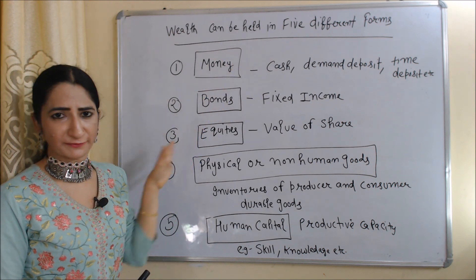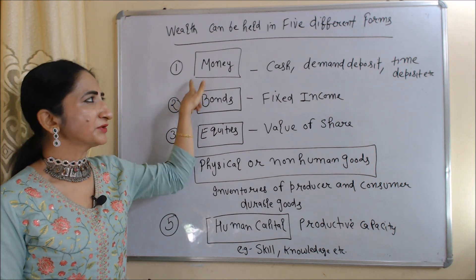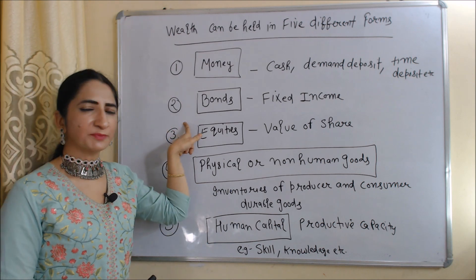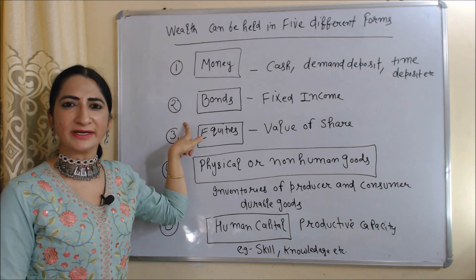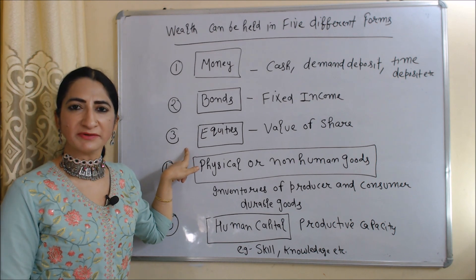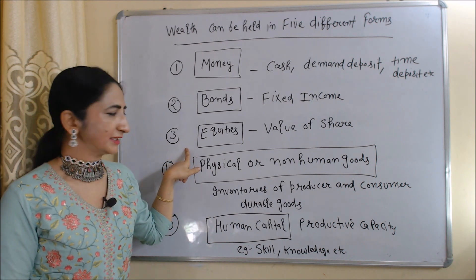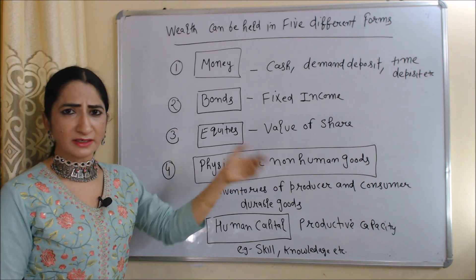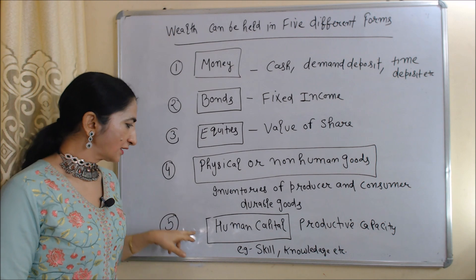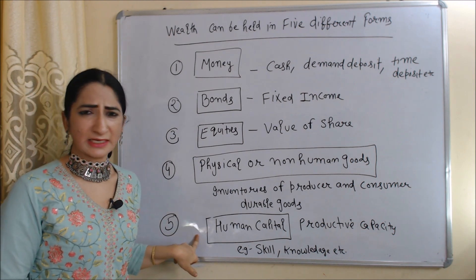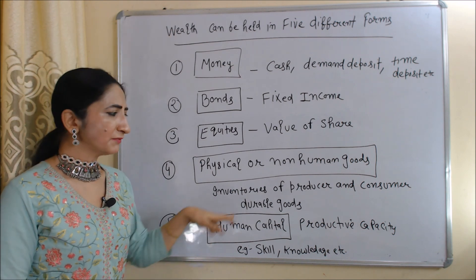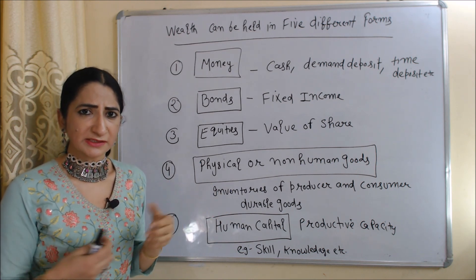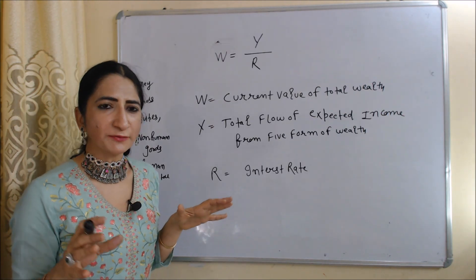Wealth can be held in five different forms. First is money — money includes cash, demand deposit, time deposit, etc. Second is bonds, which mainly provide fixed income. Third is equities — equities means the value of shares in the market. Fourth, physical and non-human goods include inventories of producer and consumer durable goods. Fifth is human capital, or human wealth, which is the productive capacity of human beings — for example, skill, knowledge, and experiences.